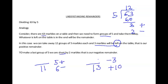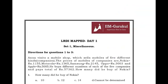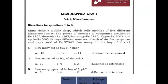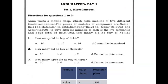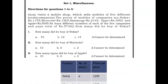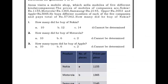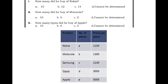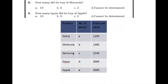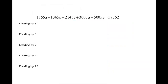Let's go on to the first set. Anna visits a mobile shop where mobiles of different companies are sold. His prices are given for each: Nokia, Motorola, and so on. The total he pays is 57,362 rupees. Let's say the number of mobiles he buys for each brand: for Nokia he buys A at the price of 1155, Motorola he buys B at 1365, another brand C at 2145, and D at 3003. So the equation will be: 1155A + 1365B + 2145C + 3003D + ...